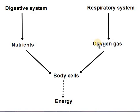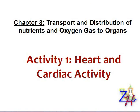Now, these nutrients and oxygen gas are destined to go to the body cells where they make energy or produce energy. The question is: how are the nutrients and oxygen gas transported to the body cells? This question will lead us to the new lesson, which is about the transportation of oxygen gas and nutrients to the organs, and in particular about the circulatory system. The first activity of this lesson is the heart and cardiac activity.